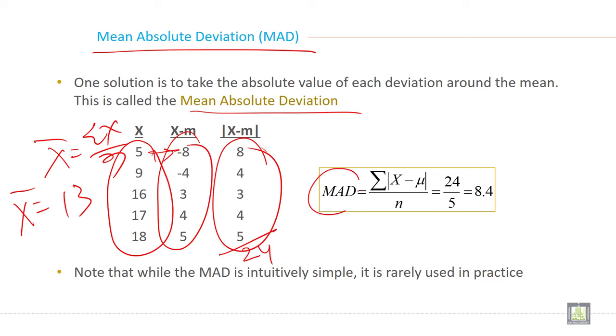MAD is equal to sigma X minus M under vertical bar divided by N. So it is 24 by 5, which equals 8.4.